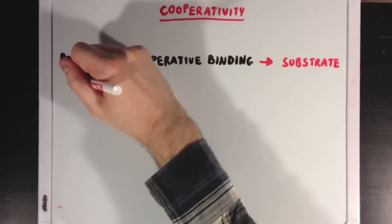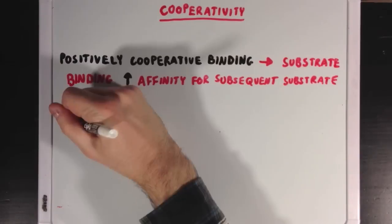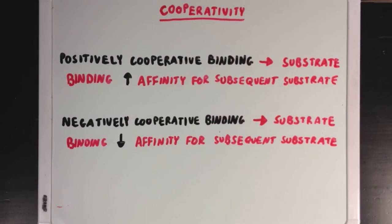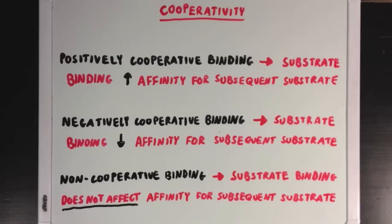With respect to cooperativity, we can define three new ideas. Positively cooperative binding occurs when substrate binding increases the enzyme's affinity for a subsequent substrate. Negatively cooperative binding occurs when substrate binding decreases the enzyme's affinity for a subsequent substrate more than you would normally expect, and non-cooperative binding is the same as the first example, where substrate binding does not affect the enzyme's affinity for substrate molecules.